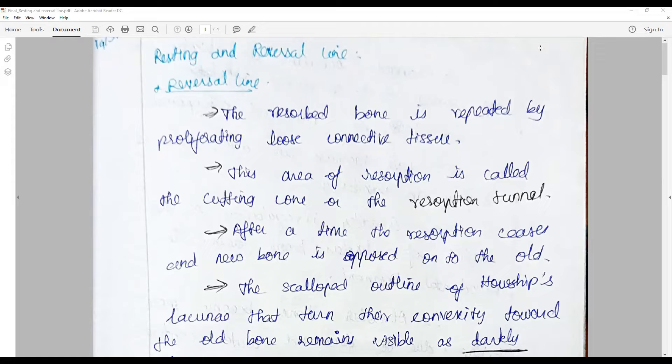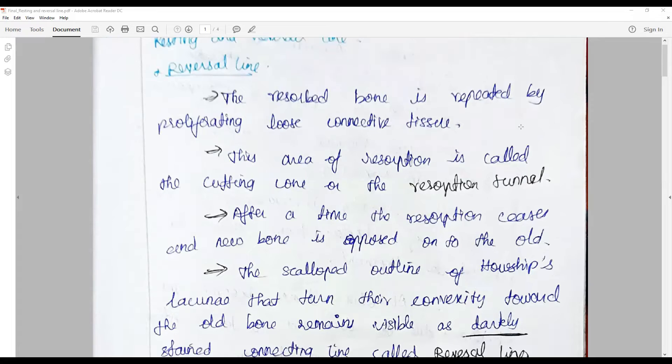is repeatedly healed by proliferating loose connective tissue, by secretion of new osteoid and calcification. That area of resorption is happening in a cuff cone-like area called the resorption tunnel. After the time of resorption ceases, new bone is laid down on the old bone.